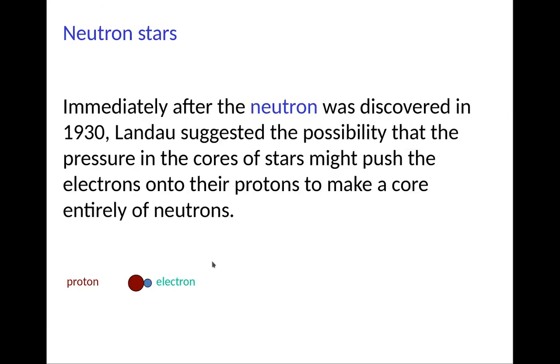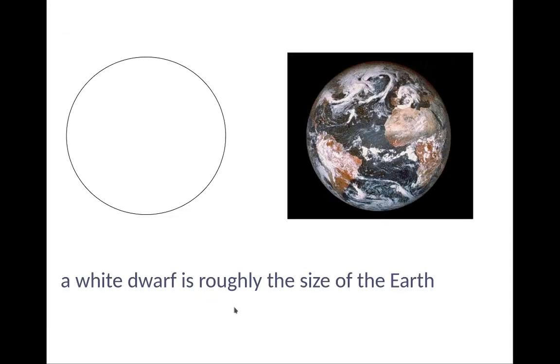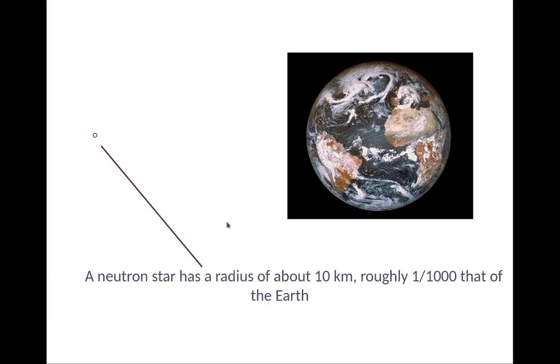So your electrons are pushed together with a proton, squeeze it, produce a neutron, release a neutrino as a result. So you go from the white dwarf, which is an iron core, down to a neutron star, which is about 10 kilometers. It collapses by a factor of 1,000 in size, and by volume, by a factor of 1,000 cubed, which is about a billion.